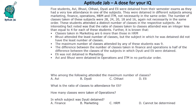For example, some person must have been detained in finance, and the total number of classes in that subject must have been one of these values. An interesting fact noted was that the ratio of classes taken to classes attended was an integer less than or equal to 4 for each of these students.